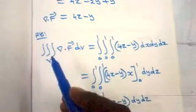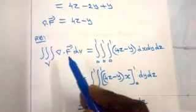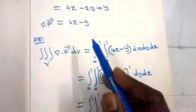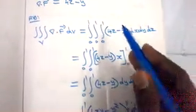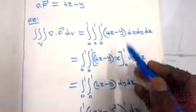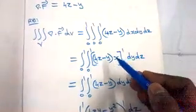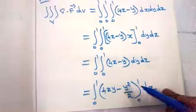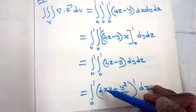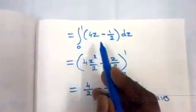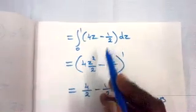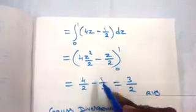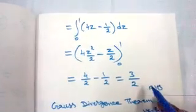The RHS is the triple integral over V of (4z − y) dV, with x, y, z each from 0 to 1. Integrating with respect to x (no x terms): gives (4z − y)·1. Integrating with respect to y: 4z·y − y²/2 evaluated 0 to 1 = 4z − 1/2. Integrating with respect to z: 4z²/2 − z/2 evaluated 0 to 1 = 2 − 1/2 = 3/2. RHS = 3/2.